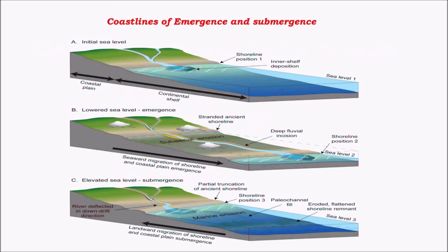A coastline of submergence is formed when the sea level rises and some part of the land is submerged. When sea level falls and recedes, the coastline that was previously covered by the sea appears — this is called a coastline of emergence. These coastlines are found mainly due to subsidence of the sea level or the upliftment or subsidence of landforms; both cases are possible.